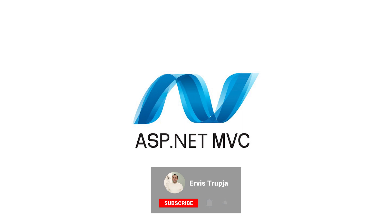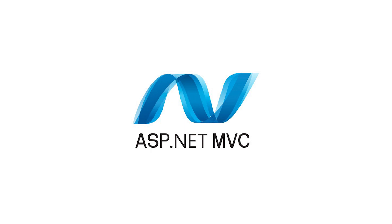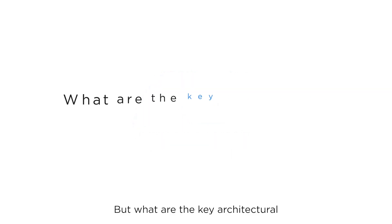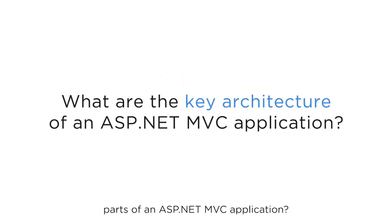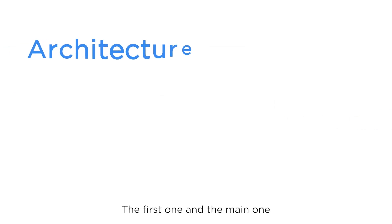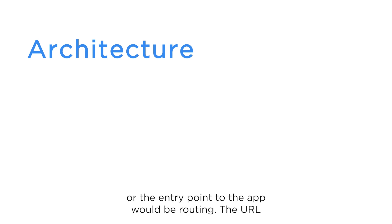ASP.NET MVC is ideal for web applications where a clear separation of concerns is needed. This separation not only makes the application more manageable but also easier to test and maintain. But what are the key architectural parts of an ASP.NET MVC application?